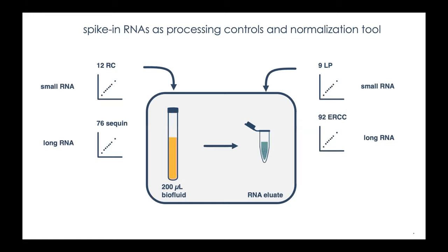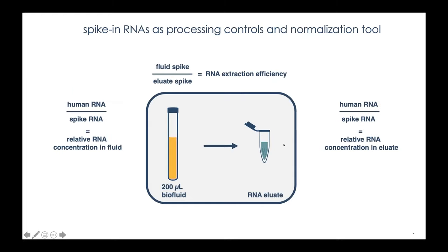Another thing I want to briefly mention is that we introduced synthetic spike-in RNAs during various steps in the workflow, both for small RNAs and long RNAs. Those have opened up a number of specific analyses, especially comparing these highly divergent biofluids. Spikes were added to the fluid itself but also to the RNA eluate, allowing calculations that reveal the RNA concentration in the fluid, extraction efficiency, and so on.